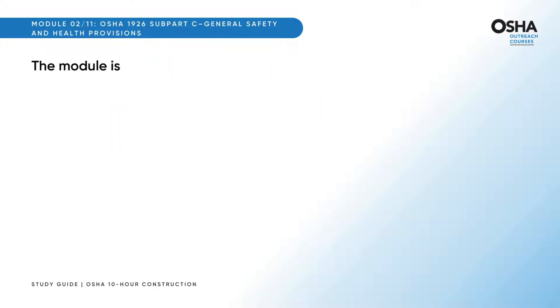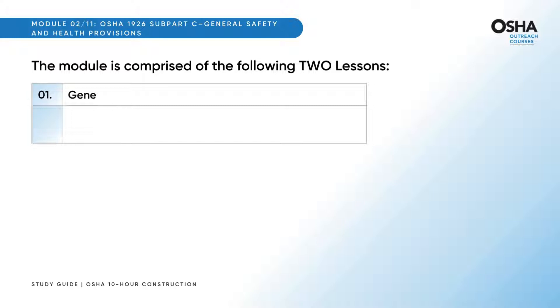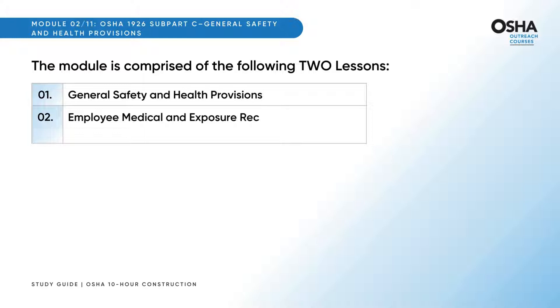The module is comprised of the following two lessons. First, General Safety and Health Provisions. Second, Employee Medical and Exposure Records, Means of Egress, and Employee Emergency Action Plans.